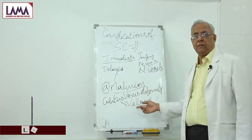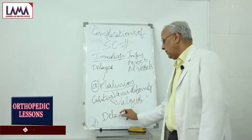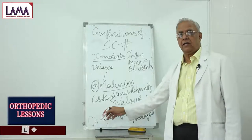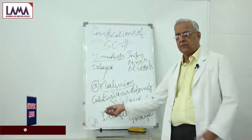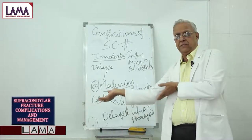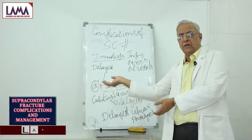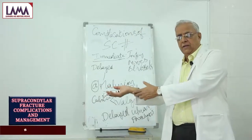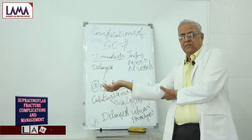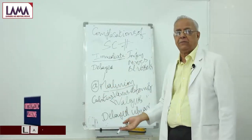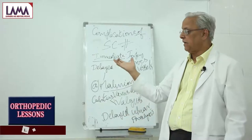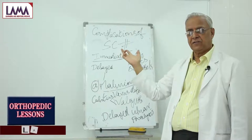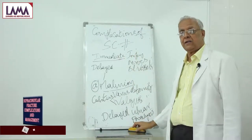Valgus malunion may result in delayed ulnar paralysis — some people use the word 'tardy ulnar paralysis.' This is because the ulnar nerve gets stretched in this deformity. As you know, we call it the funny bone. As the nerve goes from behind the elbow, it gets stretched more and more over a period of time — could be several years — and the patient develops gradual ulnar palsy. The little finger and ring finger will have a flexion deformity. This is known as delayed ulnar paralysis.